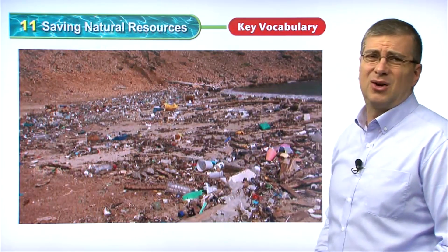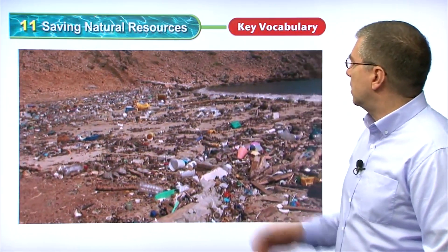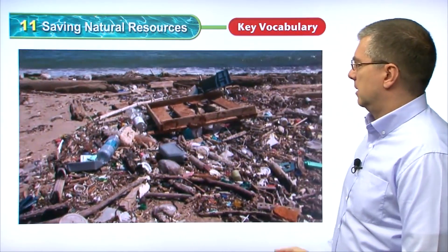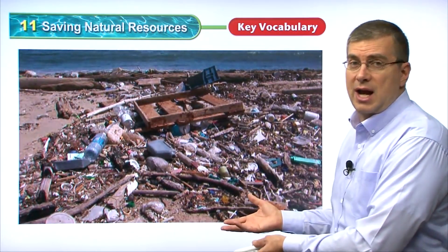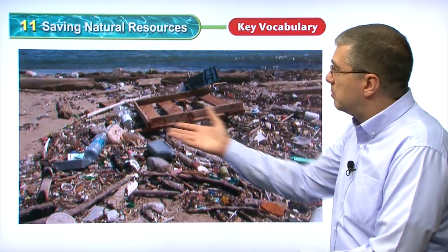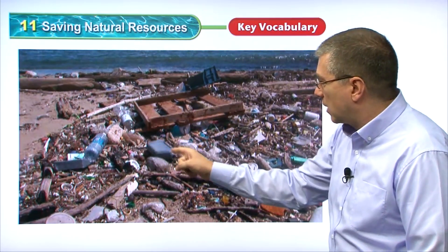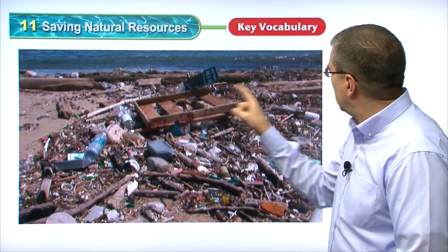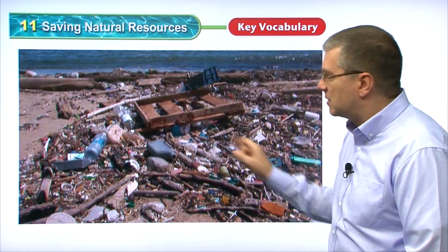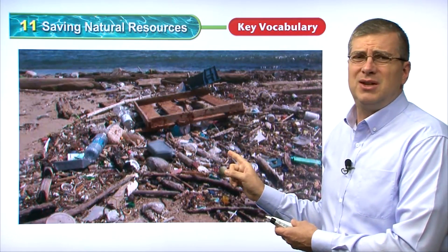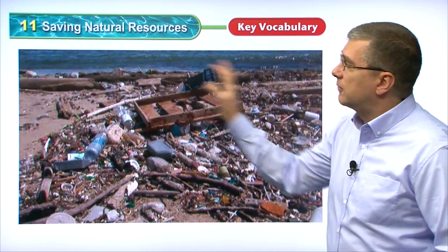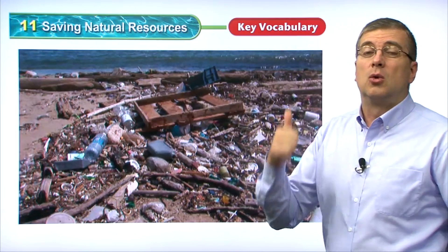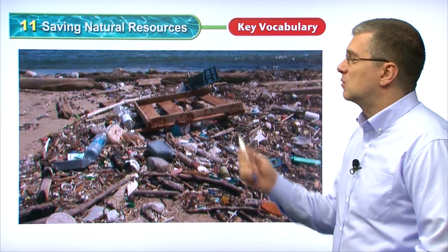This picture is terrible — we have the ocean here, which should be a beautiful place in nature, but people have dumped their trash on the beach. We can see plastic bottles, an oil bottle, old pieces of wood, cans, and pieces of glass. This is very dangerous — not just for people but also for the animals that live in this area. We need to avoid this by reducing, reusing, and recycling.